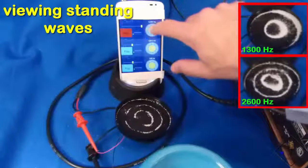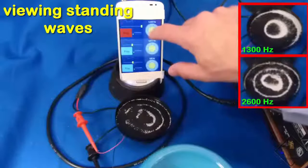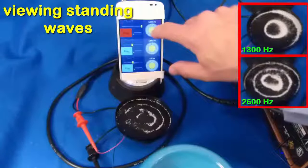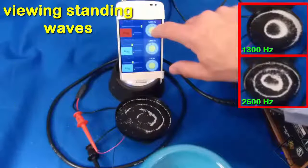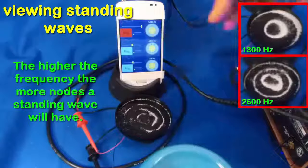If he increases the frequency even more, a standing wave is found at 5200 hertz. The higher the frequency of a standing wave, the higher its energy and the more nodes it will have.